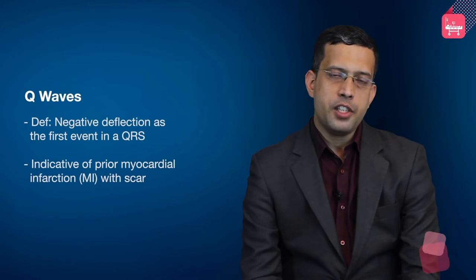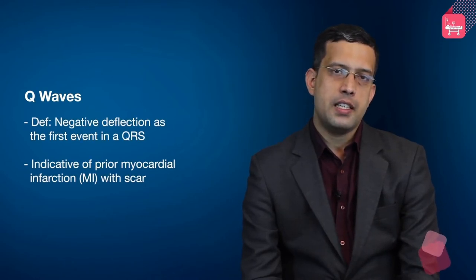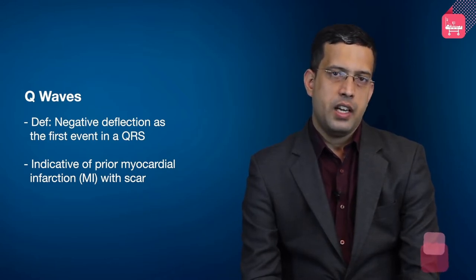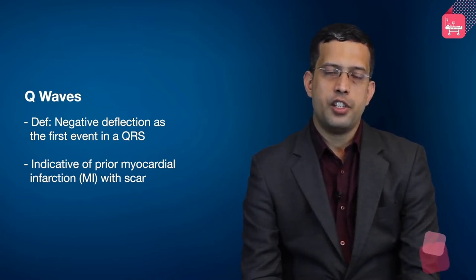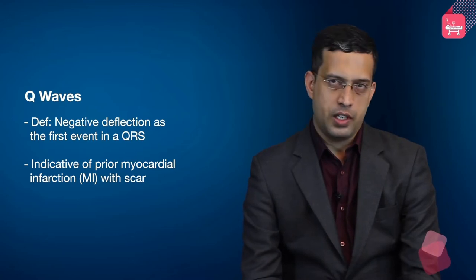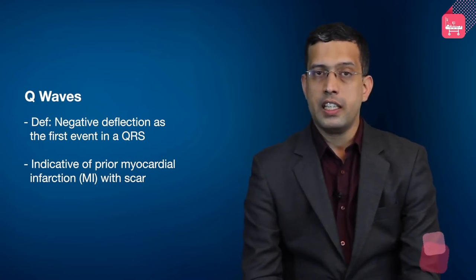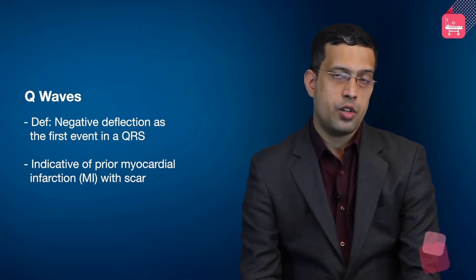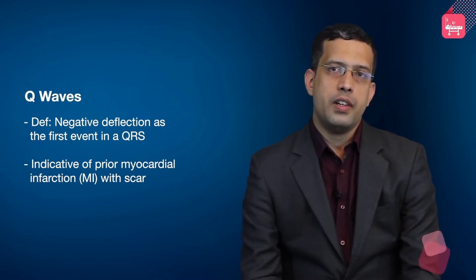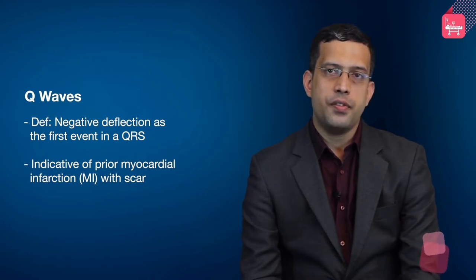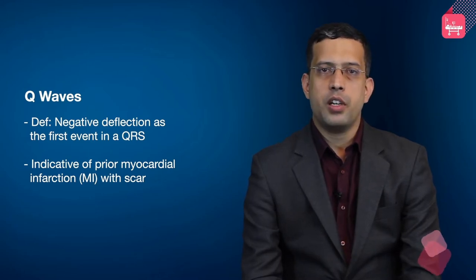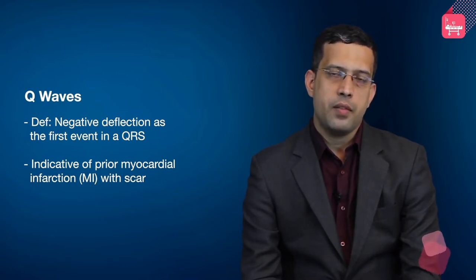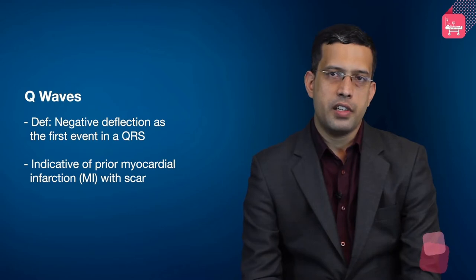A Q wave is by definition the first negative deflection in a QRS. If a negative deflection follows an R wave, it becomes an S wave, not a Q wave. A Q wave indicates that a prior myocardial infarction with scar has occurred in a particular region of the heart.